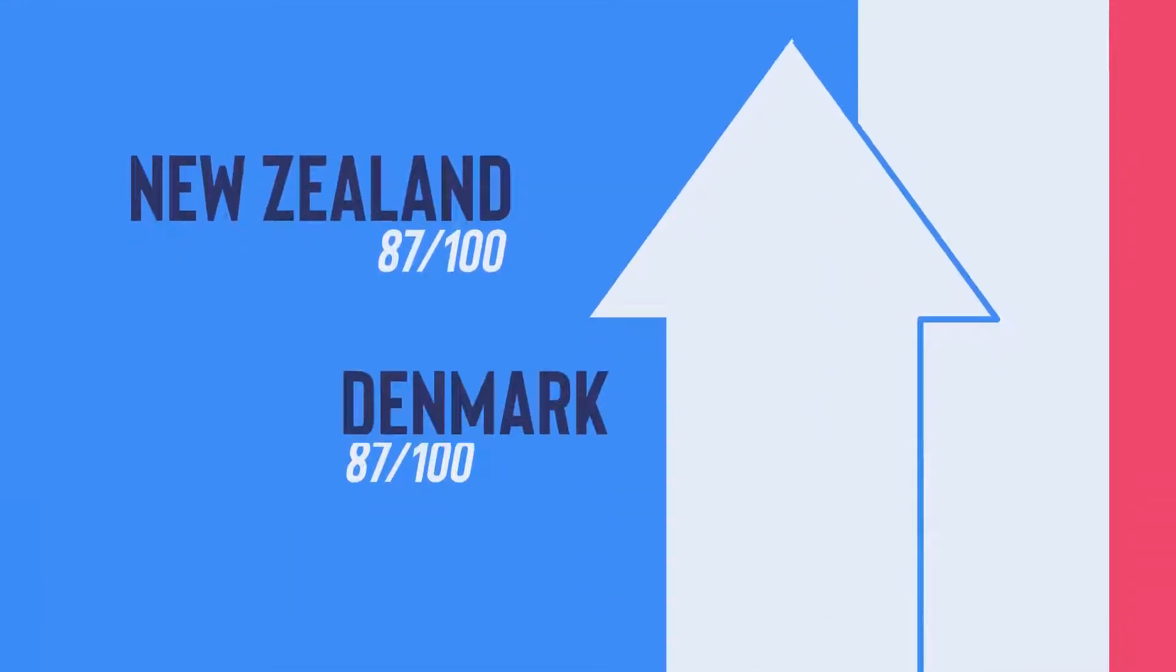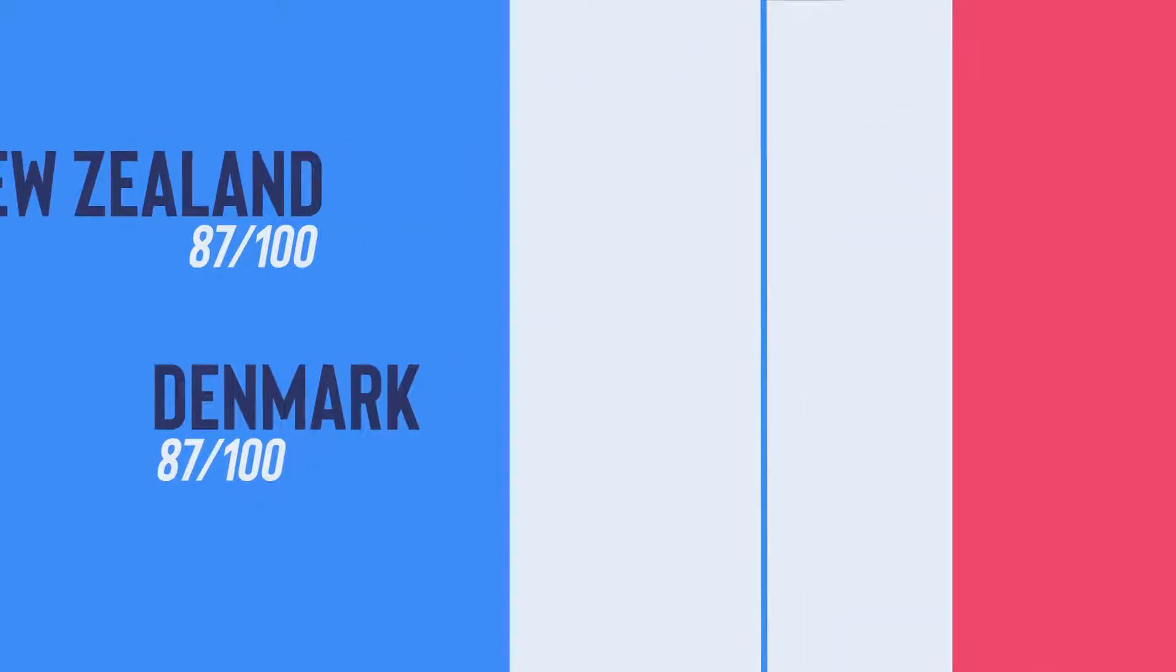The CPI analyzes public sector corruption in 180 countries and territories around the world. The top countries are New Zealand and Denmark.